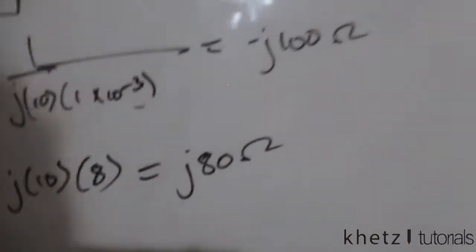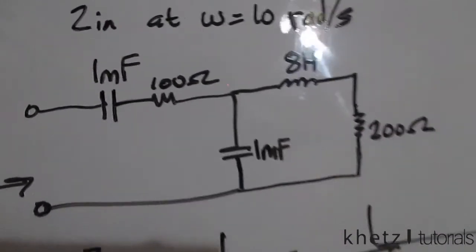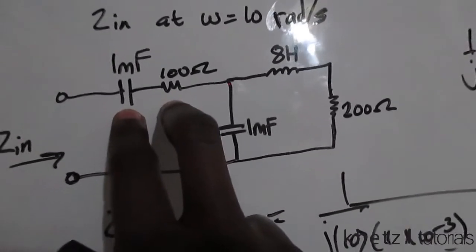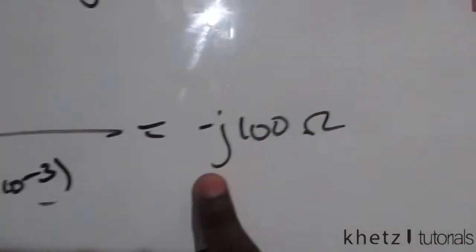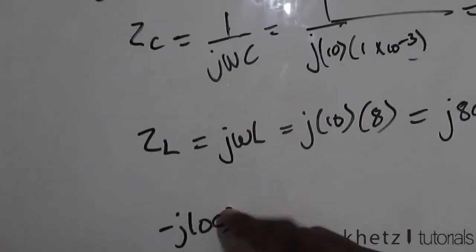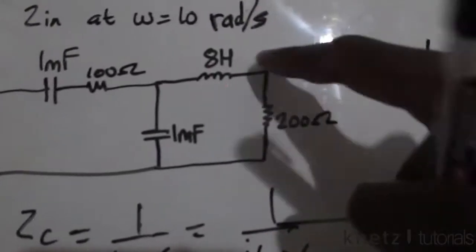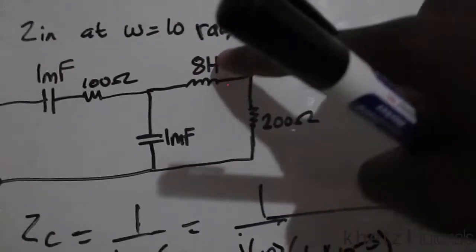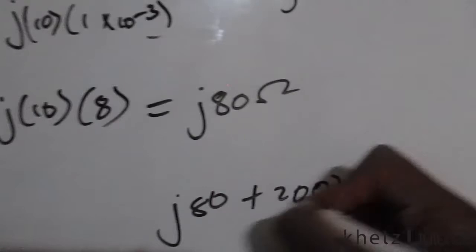Now we're set to find the equivalent impedance. We can add the elements that are in series. This impedance corresponds to the 1 millifarad capacitor: negative j100 added to 100, because they are in series. On the other side, ZL which is j80 is added to 200, because those are in series on that side.